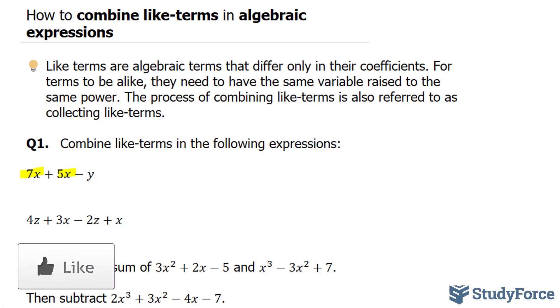Because 7 and 5 are both being multiplied to x, we can combine 7 and 5 by adding them together. 7 plus 5 is 12. And we place the variable right beside it. So 12 times x. We also have a third term, minus y. Minus y cannot be combined with any other term, so the ones that can't be combined, you just write them at the end. So we have 12x minus y.